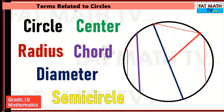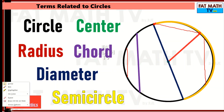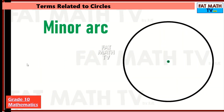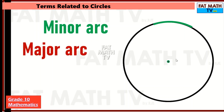A semicircle is half of the circle — this yellow one here. You can have other semicircles as well. A minor arc is a part of a circle that is smaller than a semicircle. So this is a minor arc. And a major arc is bigger than a semicircle.